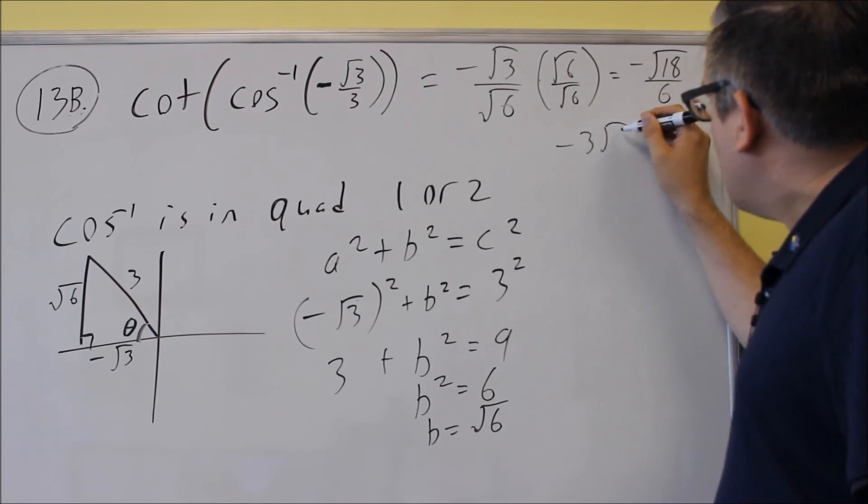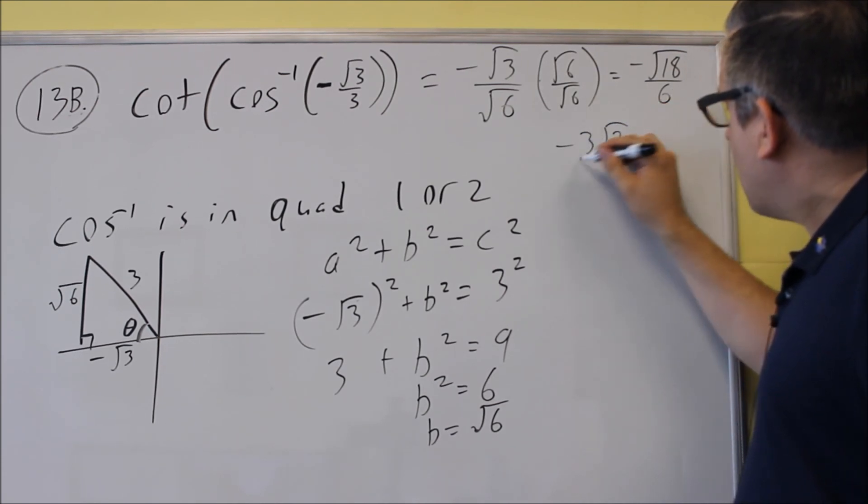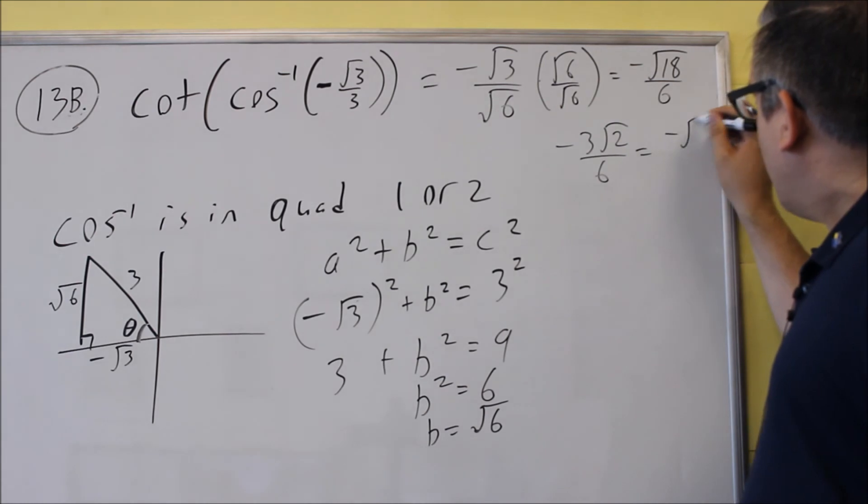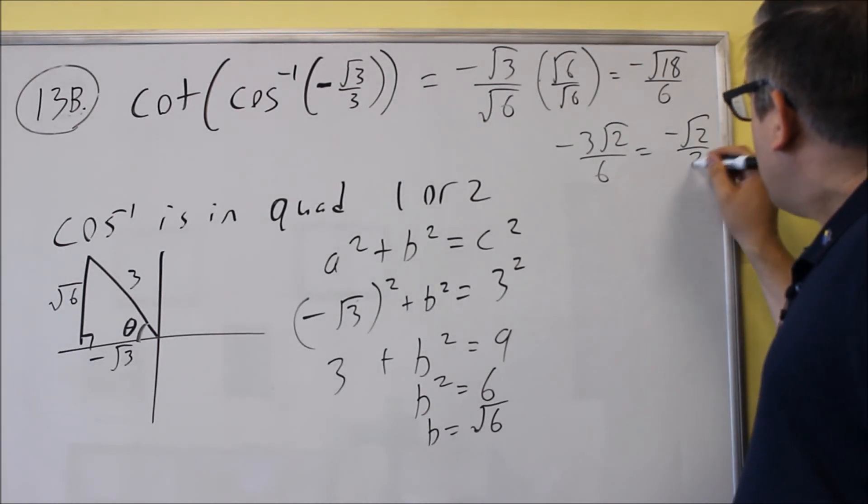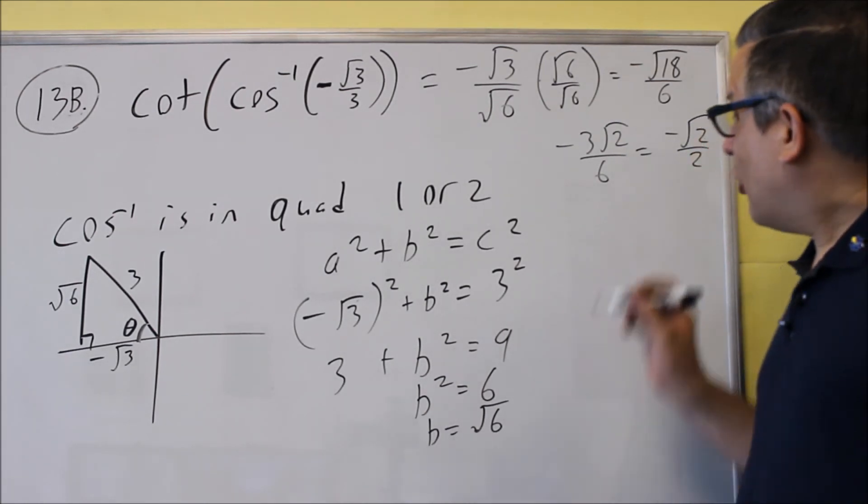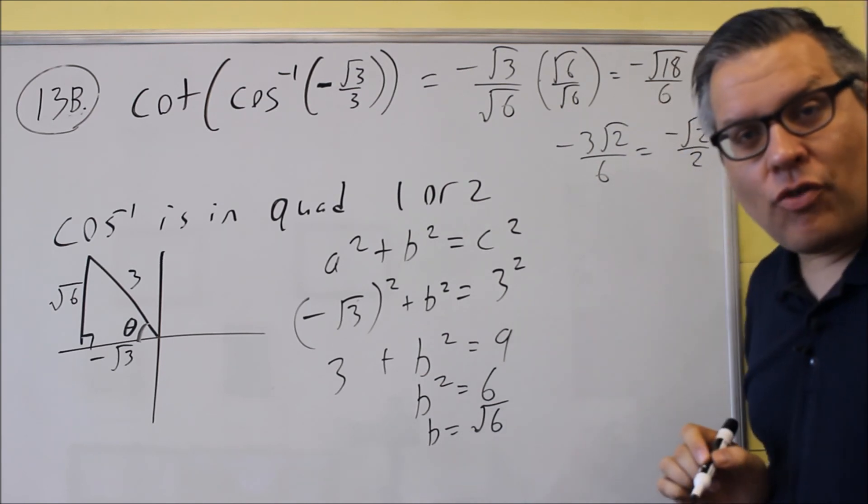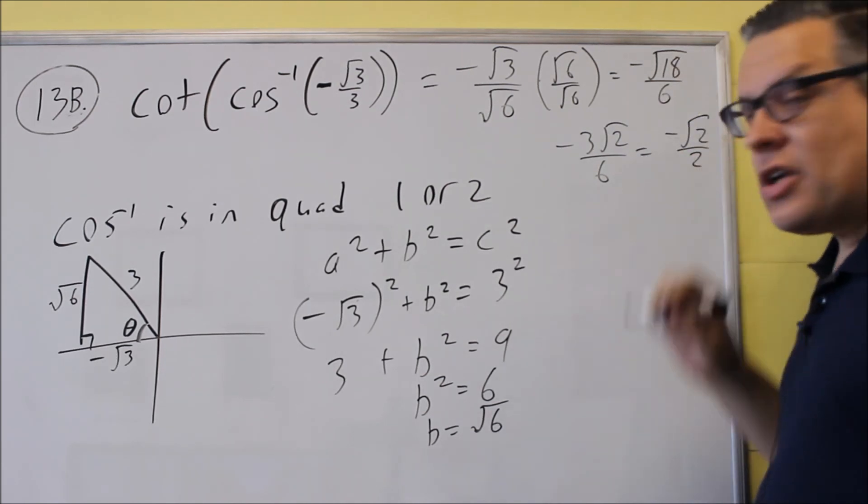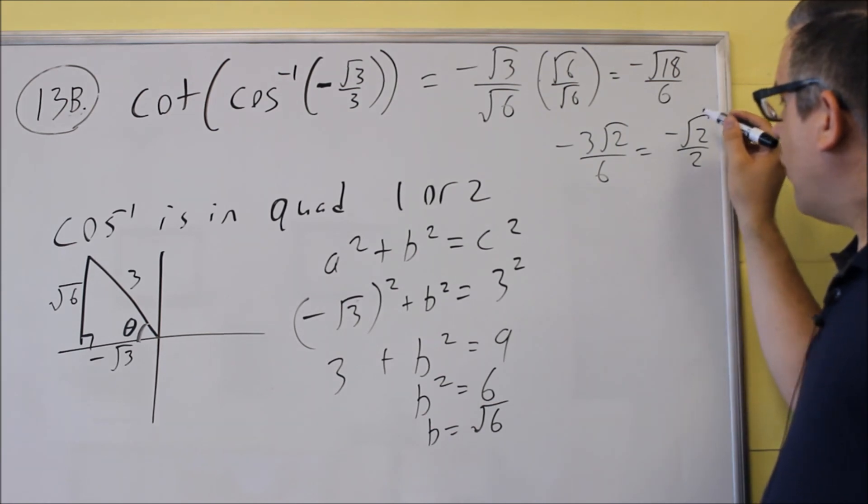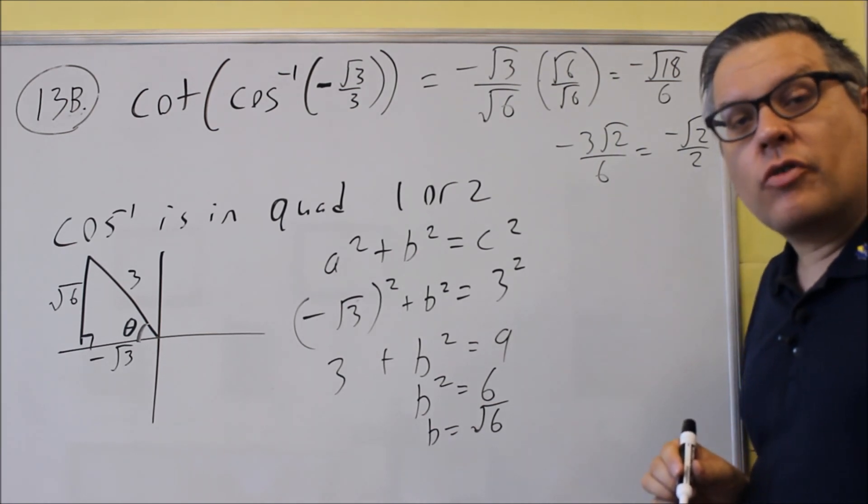So, I could also write it just like this. Negative root of 2 over 2 would also be an equivalent answer here. But I would take any of these three answers for it. These would all be considered rationalized. But the most simplified answer would be negative square root of 2 over 2. Thank you.